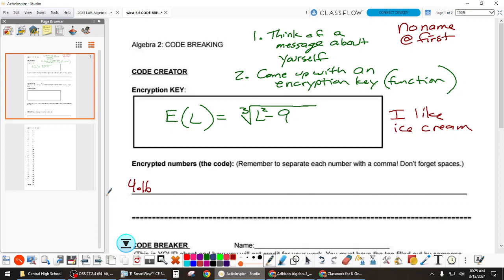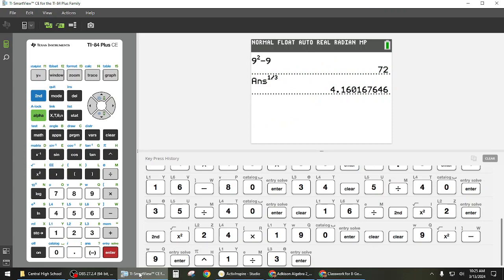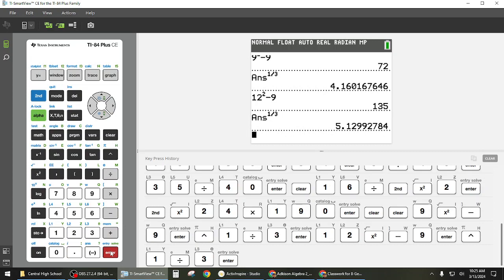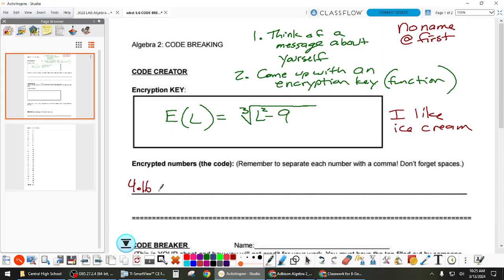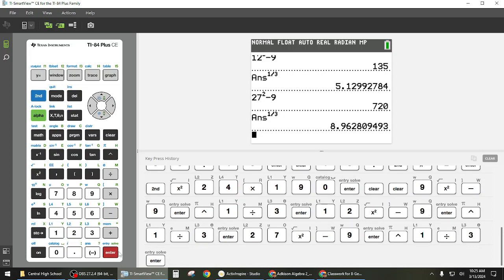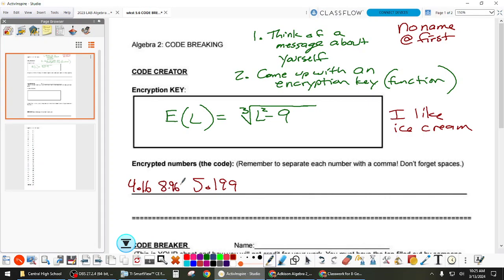Our first code starts reading like this: 4.16, and that's the letter I. Then we do L - L is letter 12. So 12 squared minus 9 to the one-third, and that's 5.199. Oh, I forgot to do the space like I told you. Space is 27, so 27 squared minus 9 to the one-third and we get 8.963. Make sure that you leave enough room that people know that's a new letter. So this is legitimate cryptography - if we drop this in the hallway, people are not going to know how to decrypt it. It's a coded message that most people aren't going to be able to decrypt because they don't know what we're doing.